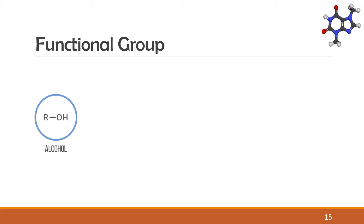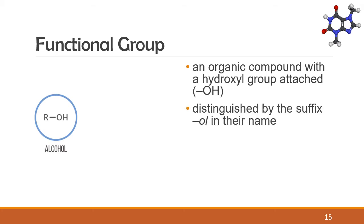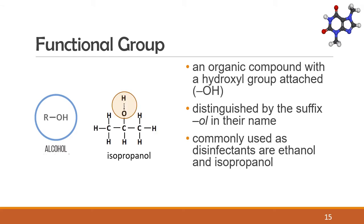Our next functional group is alcohol, or the hydroxyl group. It is distinguished by the OH group attached to the carbon chain, represented by the letter R. Alcohols are distinguished by the suffix "-ol" in their name. We are familiar with isopropanol because we use it as a disinfectant along with ethanol. Xylitol is a sugar substitute that we use in gums and sweeteners.